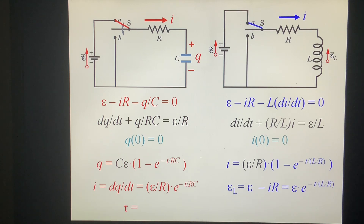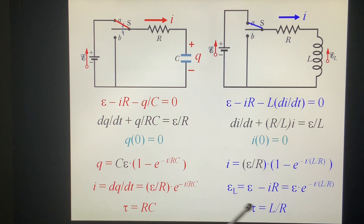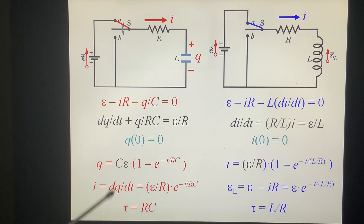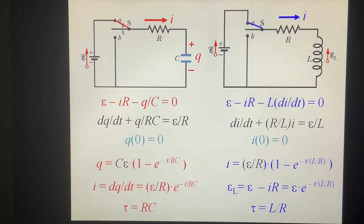These two circuits have time constants: tau equals RC for the R-C circuit, and tau equals L/R for the R-L circuit. We call them time constants. When T equals one time constant, about 67% of the process has finished. When T equals two time constants, 95% of the process has finished.